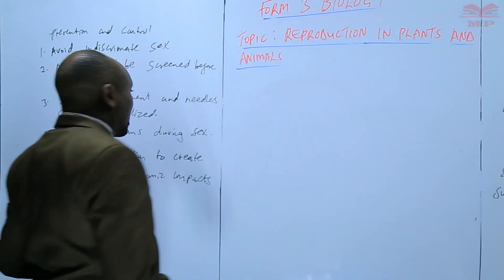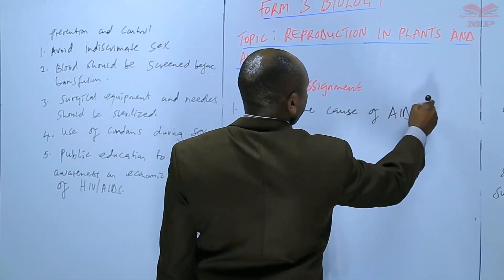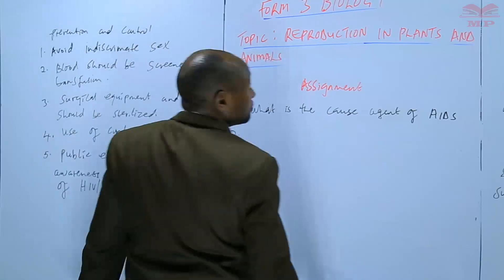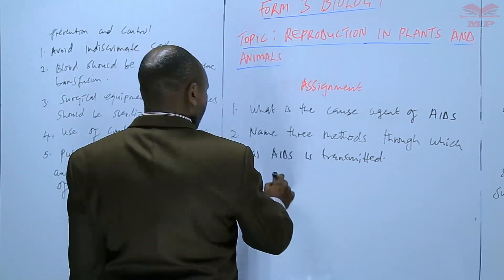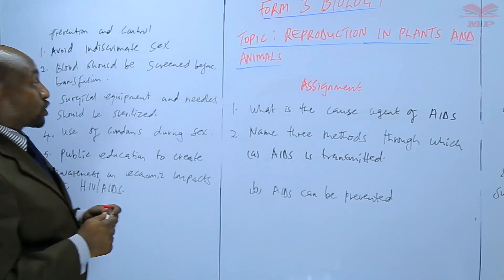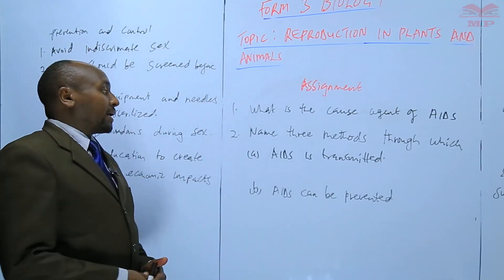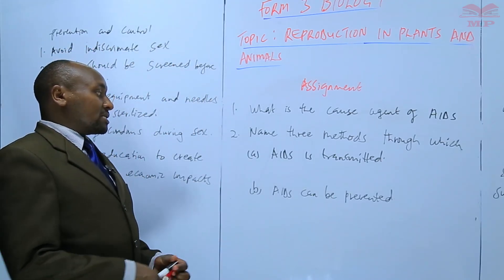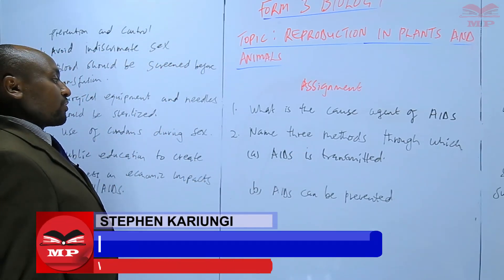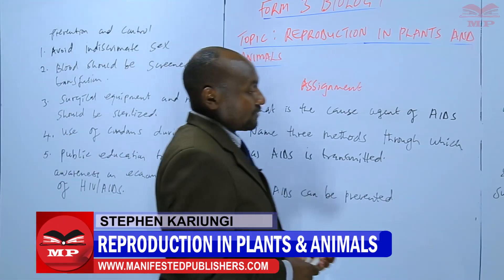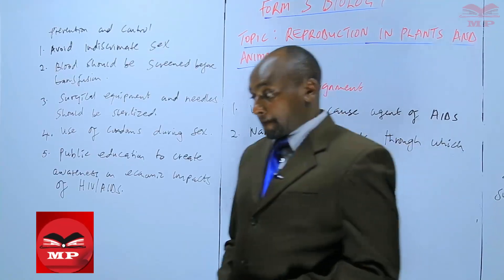There will be an assignment. Question one: what is the causative agent of AIDS? Number two: name three methods through which AIDS is transmitted. Part B: name three methods through which AIDS can be prevented. We are going to stop there until next time. Goodbye.